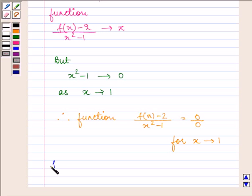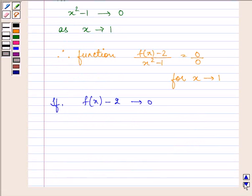if f(x) minus 2 approaches 0, then we have limit as x approaches a, f(x) minus 2 equal to 0. So,